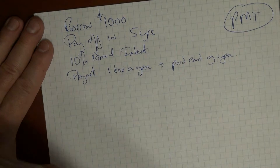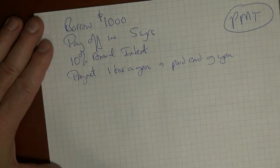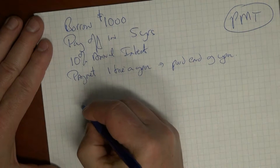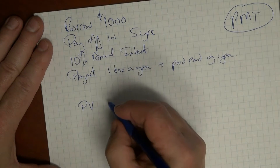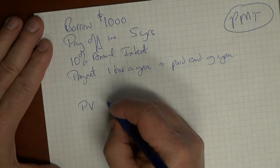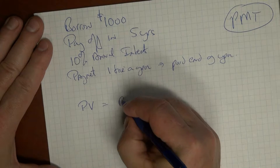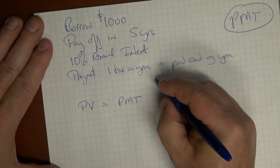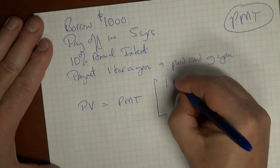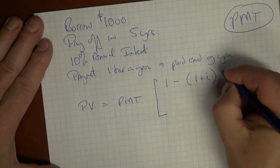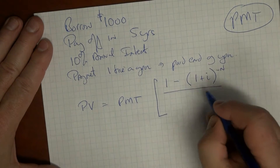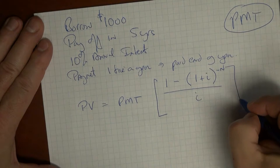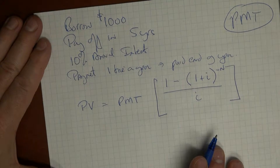If we borrow $1,000, we have $1,000 in hand today and pay it off over time. Essentially we're calculating the present value of the loan, so we use our present value formula. The present value formula is: PV equals PMT times the quantity 1 minus (1 plus i) to the minus n, which is the number of periods, all over i.